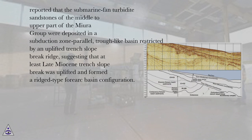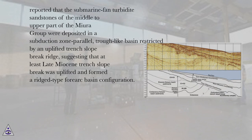Reported that the submarine fan turbidite sandstones of the middle to upper part of the Miura Group were deposited in a subduction zone-parallel, trough-like basin restricted by an uplifted trench slope break ridge, suggesting that at least the late Miocene trench slope break was uplifted and formed a ridge-type Forearc Basin configuration.